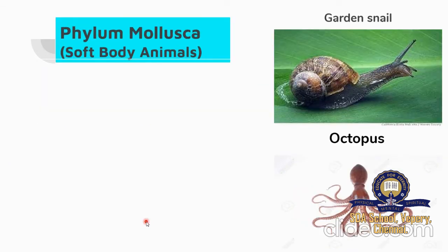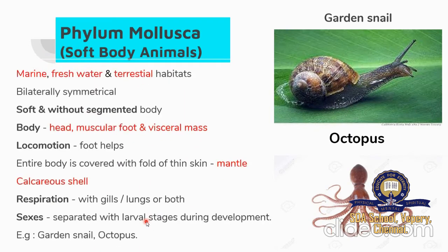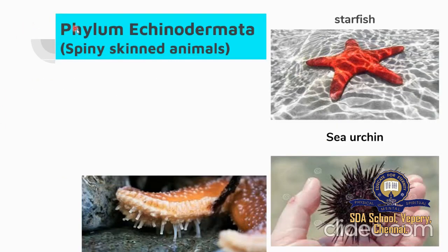Next Phylum is Mollusca — soft-bodied animals. They are a diversified group living in marine, freshwater, and terrestrial habitats. The body is bilaterally symmetrical, soft, and without segmentation, divided into head, muscular foot, and visceral mass. The foot helps in locomotion. The entire body is covered by a fold of thin skin called the mantle, which secretes an outer calcareous shell. Respiration is through ctenidia or lungs, or both. Sexes are separate with larval stages during development. Example: garden snail and octopus.